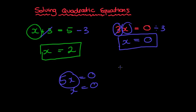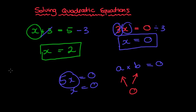Even with something like a times b equals 0, we know that one of the two has to be at least 0 — we just don't know which one. Similarly, if we have x plus 3 equals 0, what does x need to be? Well, x is simply minus 3.